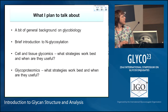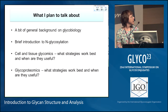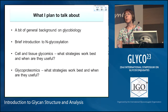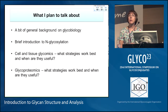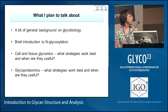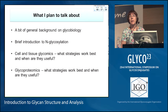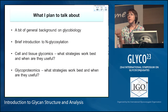Once we've got that little bit of background under our belts, I'll focus on how cell and tissue glycomics can help us to understand, together with those who are working on the biology, the function of glycans. I will touch on the strategies that we use — they're not the only strategies, and you will be encountering others during the meeting. And then a little bit at the end on glycoproteomics. I'm trying not to cover areas that I know you will be encountering later on.